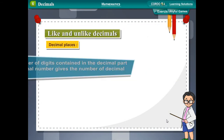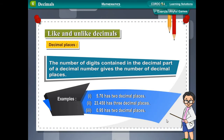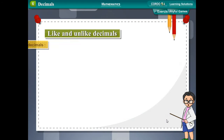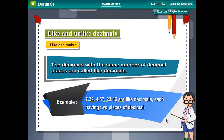Like and unlike decimals. Decimal places: the number of digits in the decimal part of a number gives the number of decimal places. For example, 5.76 has 2 decimal places, 23.458 has 3 decimal places, and 0.95 has 2 decimal places. Like decimals are decimals with the same number of decimal places. For example, 7.39, 4.57, and 23.86 are like decimals, each having 2 decimal places.